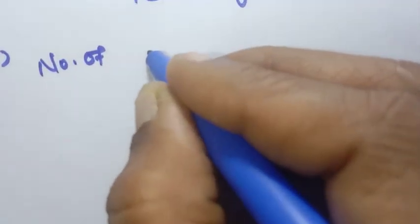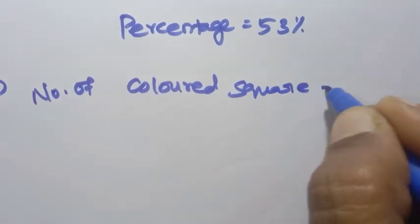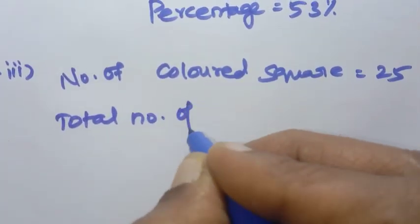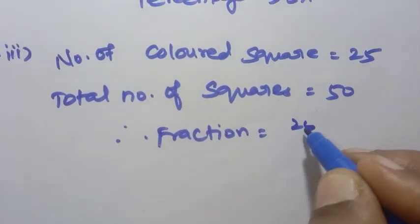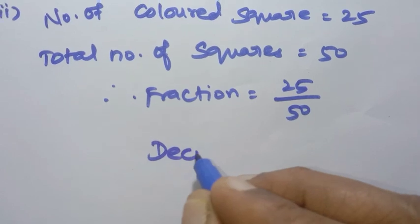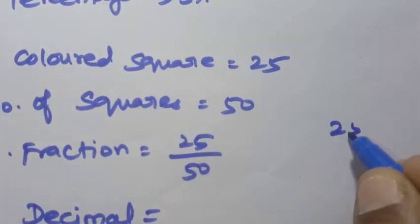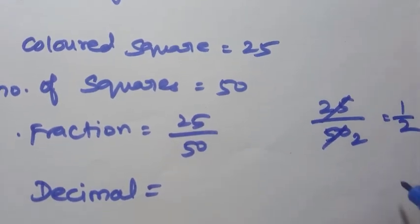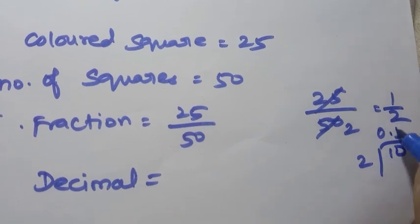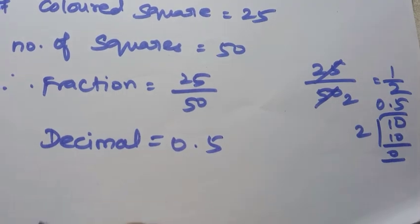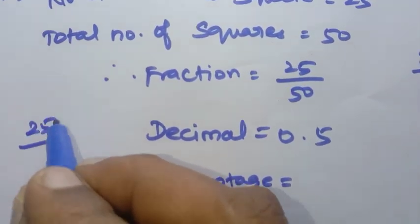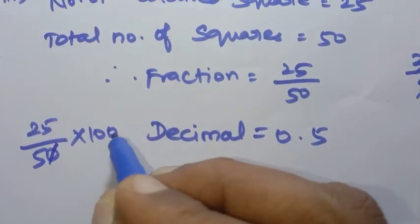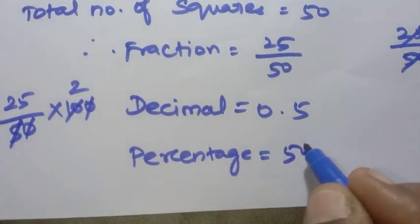For sum 3: number of colored squares = 25, total number of squares = 50. Fraction = 25/50. Decimal: 25/50 = 1/2 = 0.5. Percentage: 1/2 × 100 = 50%. So the percentage is 50%.